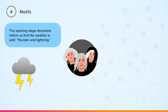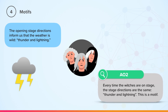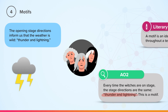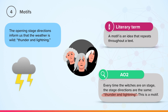Now we are going to look at some AO2 language analysis of these same stage directions of thunder and lightning. Every time the witches are on stage, the stage directions are the same — it is always thunder and lightning. This is a motif. A motif is an idea that repeats throughout a text.